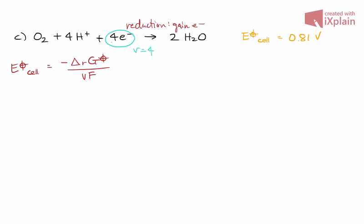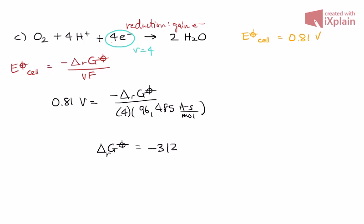Like always, we just plug it back into the formula. 0.81 volts equals negative G over 4, and then Faraday's constant. Solving this all out, you should get that delta G, biological standard state, is equal to negative 312.6 kilojoules per mole.